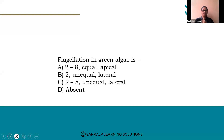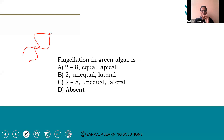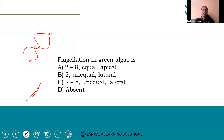Next question: flagellation in green algae — option A: 2 to 8, equal length, apical. Option B: 2, unequal, lateral. Option C: 2 to 8, unequal, lateral. Option D: absent. Option A — 2 to 8, equal, apical — is the right answer.